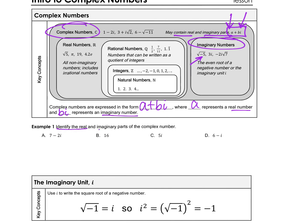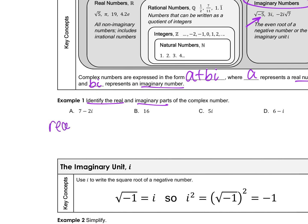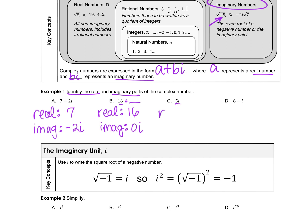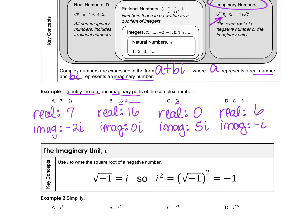We're going to identify the real part and imaginary part of each complex number. For part a, the real part is 7 and the imaginary part is negative 2i. For part b, the real part is 16 and there is no bi term, so the imaginary part is 0i. For part c, the imaginary part is 5i and there is no real part, so we write 0. For part d, the real part is 6 and the imaginary part is negative 1i.